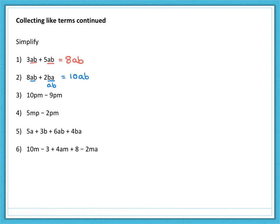Now, number three, 10PM minus 9PM. Again, think of the PM as a single term. It gives you an answer of 1PM left over, or just a single PM left over.